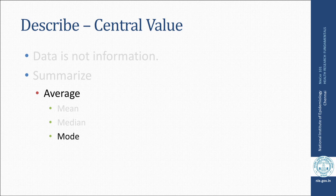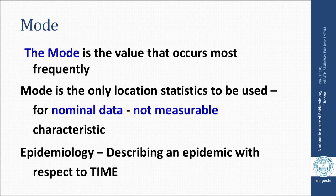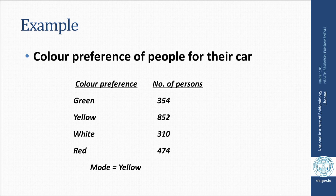If n is even, you take the average of the middle two values. Another measure is the mode — the value that occurs most frequently. Mode is the only location statistic that can be used for nominal data that are not measurable. In epidemiology, we use mode in epidemic curves with respect to time; we look for the modal class, which gives an idea of the incubation period of the pathogen. For example, in a color preference survey, if 852 people prefer yellow, that is the highest, so the modal class is yellow.